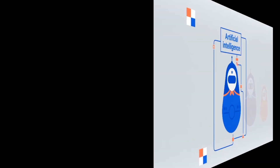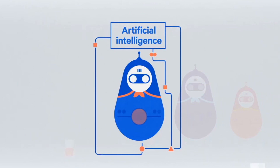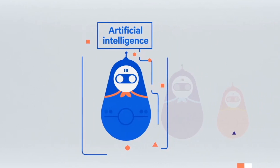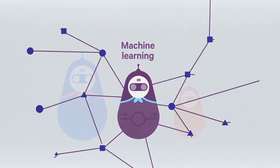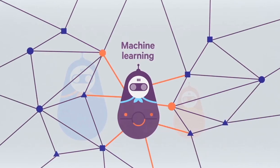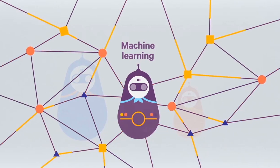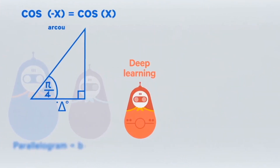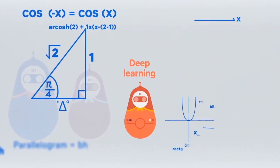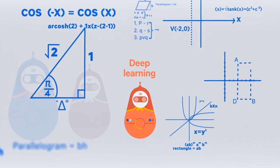Artificial intelligence involves mainly two key approaches: first, machine learning — algorithms with the ability to learn without being explicitly programmed; and second, deep learning, in which artificial neural networks adapt and learn from vast amounts of data.